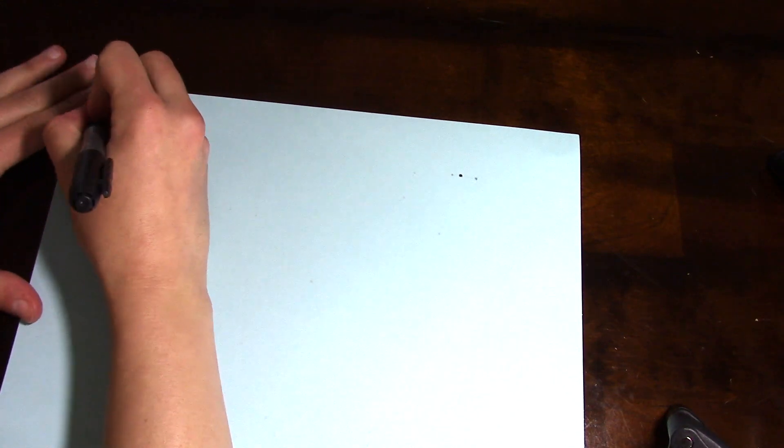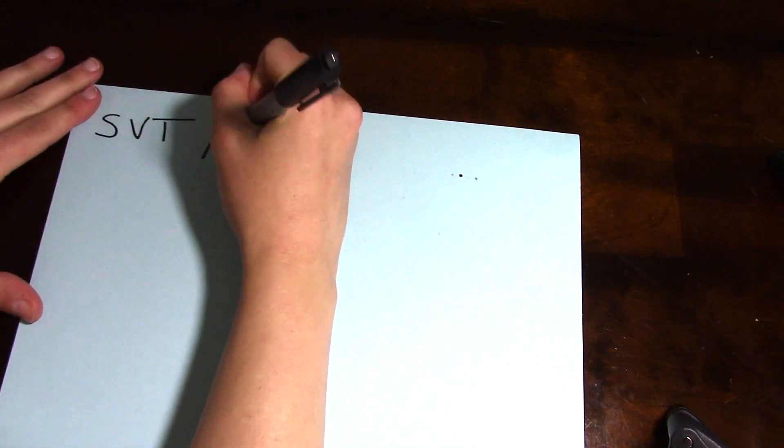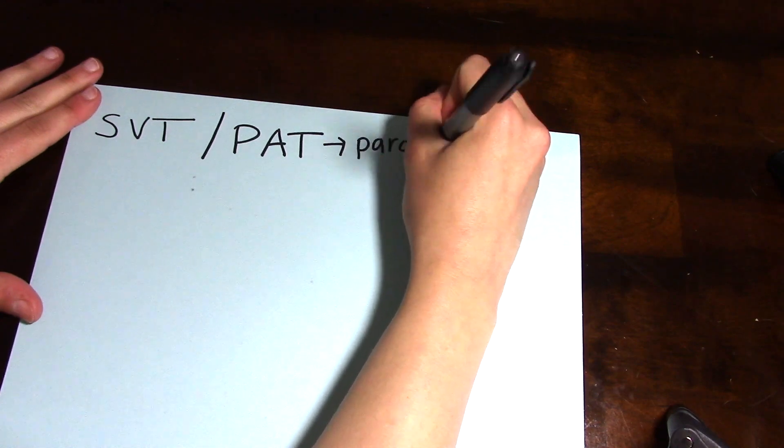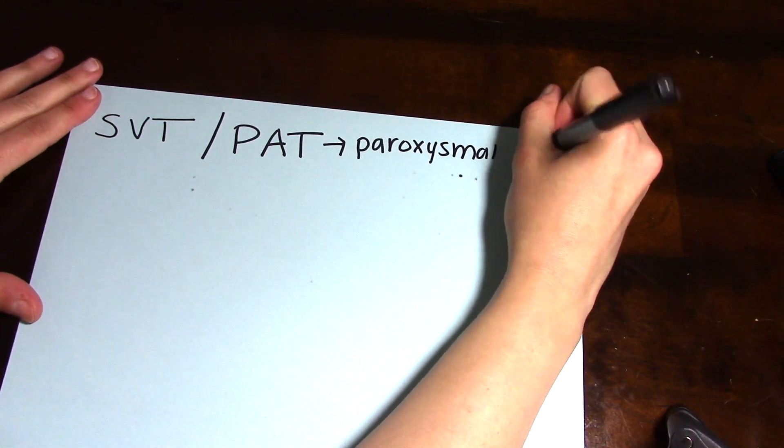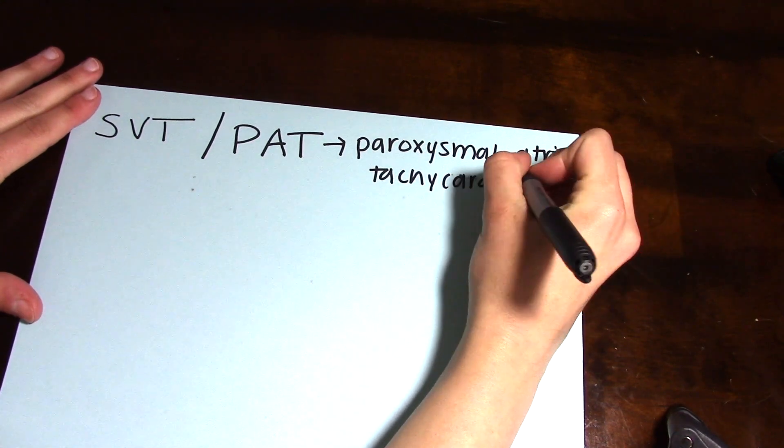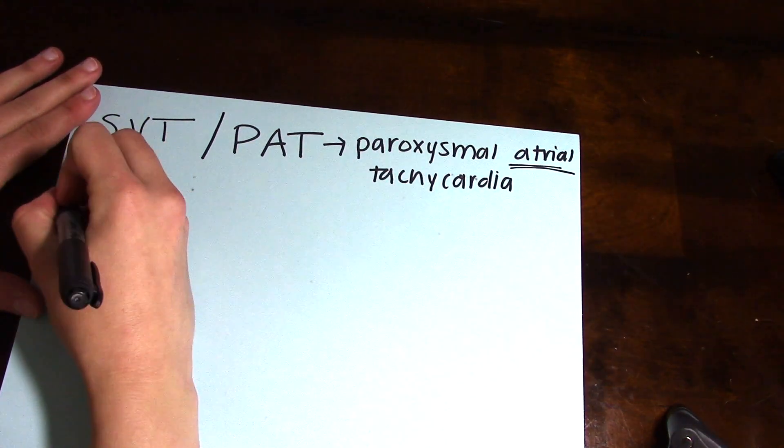SVT can also be called PAT, or paroxysmal atrial tachycardia, but we'll just be calling it SVT as that is the most common name. The origination of this name, supraventricular, means that this rhythm occurs above the ventricles or in the atrium.